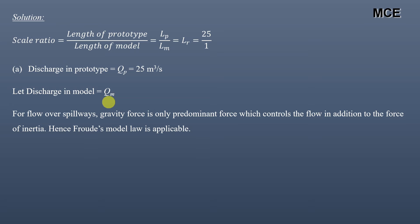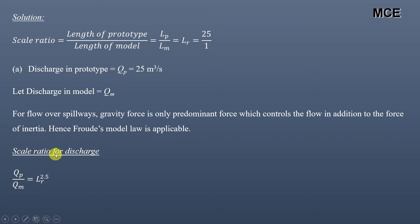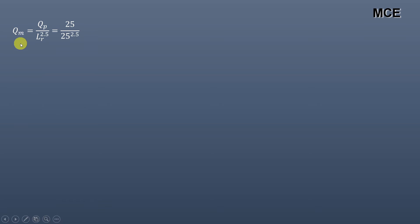The scale ratio for discharge in terms of Froude's model law is given as Qp/Qm = Lr raised to the power 2.5. Putting the values of Qp and Lr, we get the value of Qm, which is the discharge in the model. So Qm = Qp divided by Lr^2.5, which is 25 divided by 25^2.5, equal to 0.008 cubic meters per second.